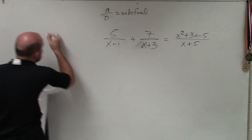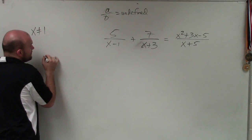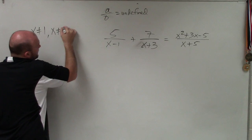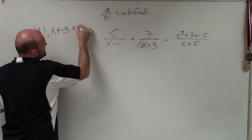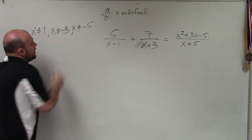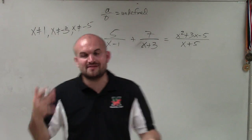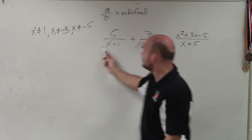And the values that I'm going to choose are x cannot equal 1, x cannot equal 3 or negative 3, and x cannot equal negative 5. Now, why am I choosing these values? Well, if I take 1 and I plug it in for x, you can see that 1 minus 1 is going to be 0.